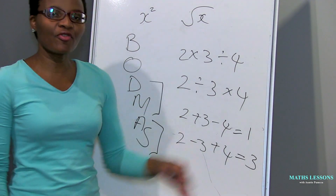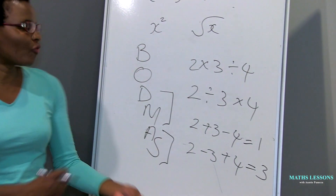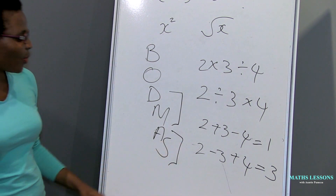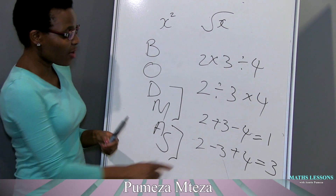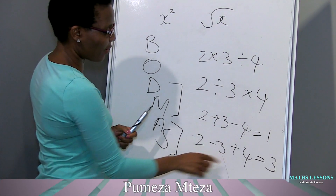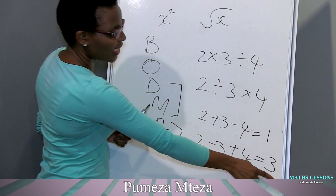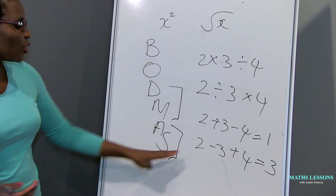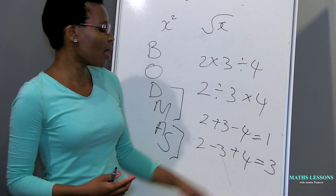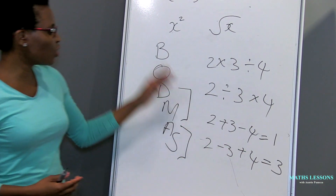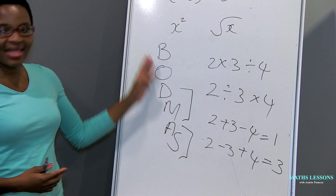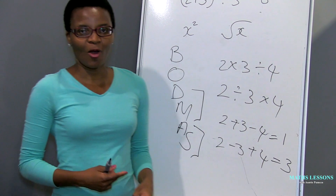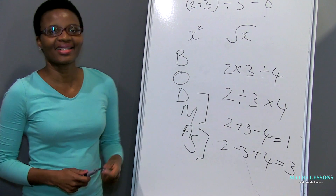We're going to apply BODMAS every time. If you didn't apply BODMAS — for example, if you treated addition and subtraction out of order — you will get a wrong answer and wonder why. Because you did not apply the right rules, you get the wrong answer. Okay guys, that's it!